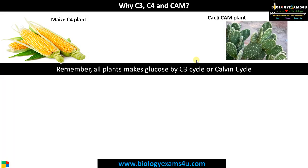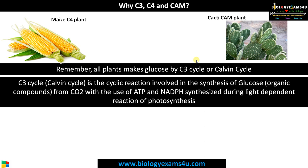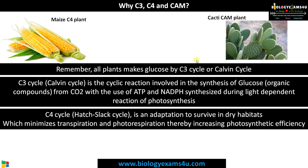Now, why C3, C4, and CAM pathways? The most important point is all plants make glucose by the C3 cycle or Calvin cycle. The Calvin cycle is involved in the synthesis of glucose from carbon dioxide using ATP and NADPH synthesized during the light reactions of photosynthesis — it is universal to plants for glucose synthesis. The C4 cycle is also an adaptation to surviving dry habitats, minimizing energy wastage by photorespiration and thus increasing photosynthetic efficiency.